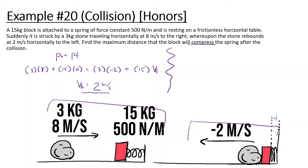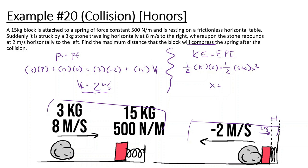Now, all the kinetic energy of the block is going to turn into elastic potential energy. As the block moves 2 meters per second to the right, it compresses the spring. So one-half times mass 15 times velocity 2 squared equals one-half times k, which is 500, times x squared. Solving: 0.5 times 15 times 2 times 2 divided by 500, then taking the square root, gives us x equals 0.24 meters.